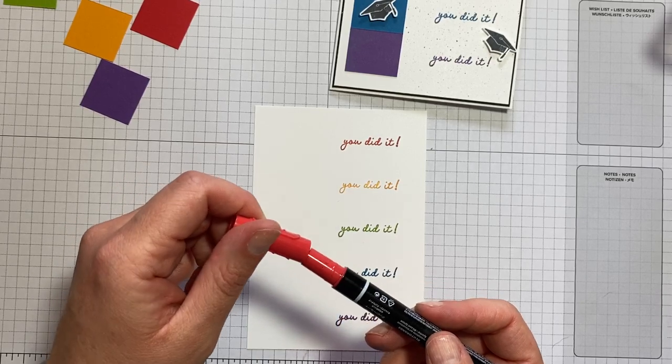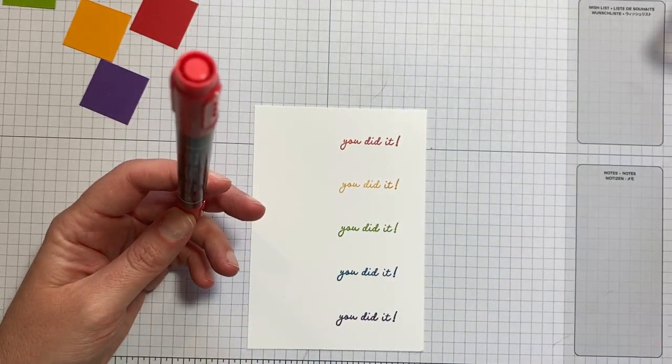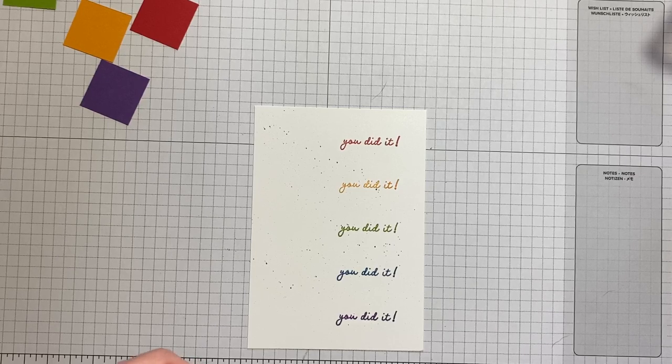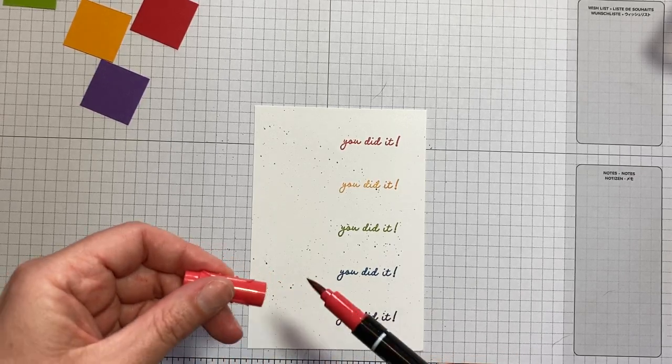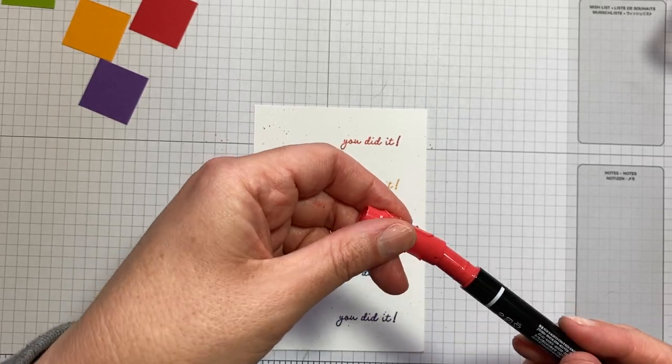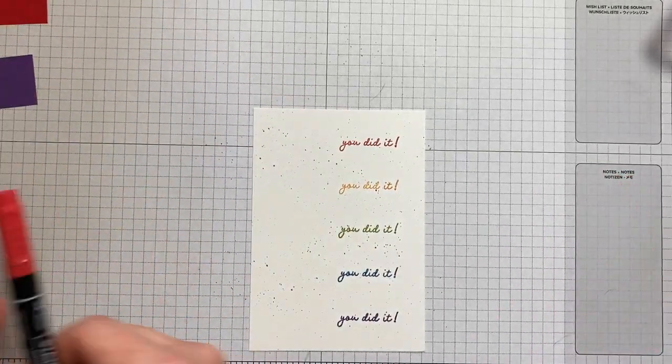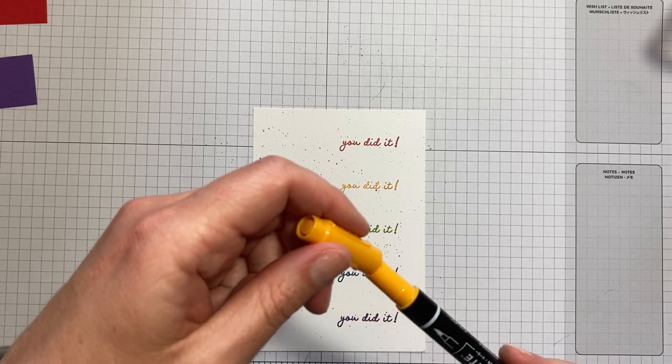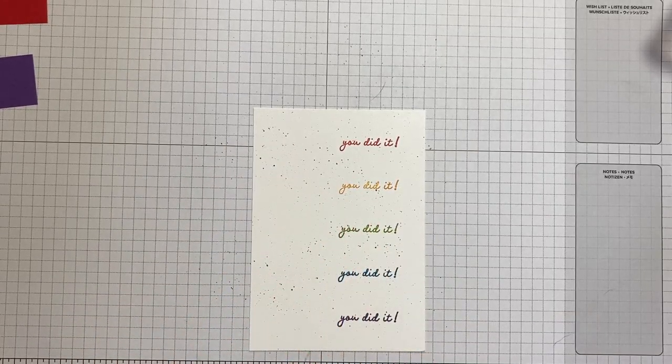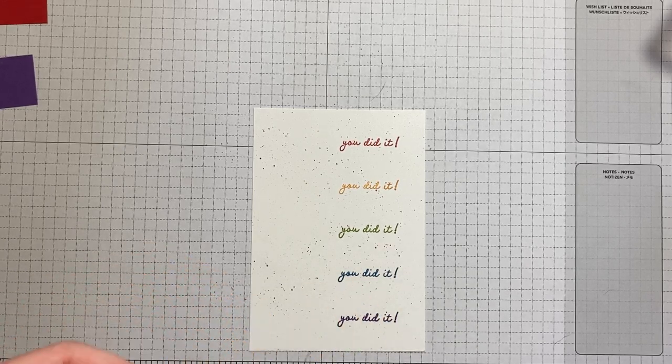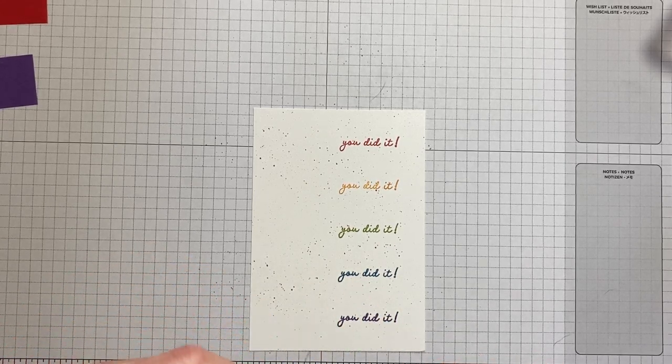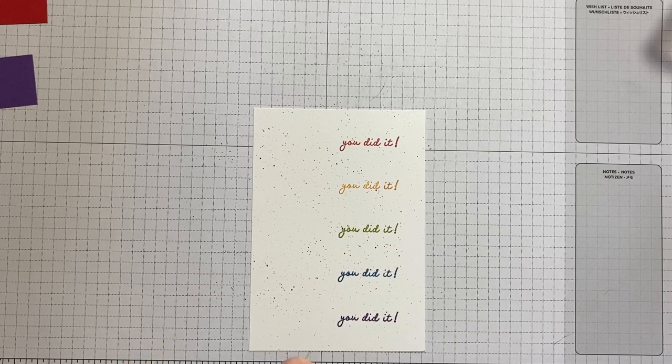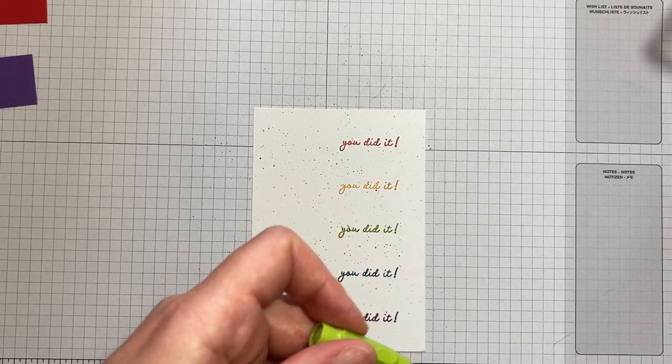And then you're going to pop the nib inside the cap. And I'll move this one out of the way, otherwise that will get some extra splatters. And you're just going to flick across the page. And obviously, depending on how hard you flick and how close to the paper you flick, you'll get different amounts of ink going in.